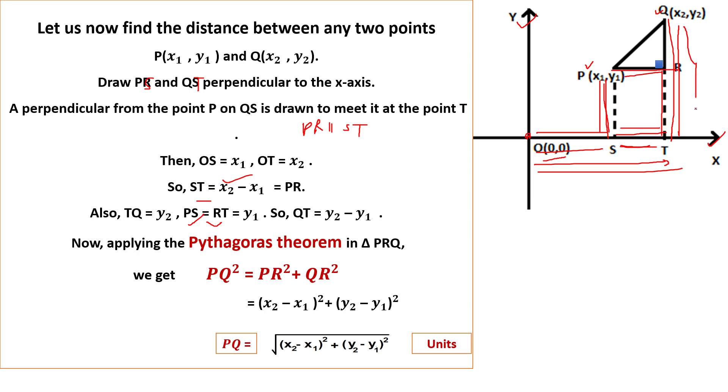Why? Because this whole length is y2 and this is y1, so RT is also y1, it will be y2 minus y1. Correct? So we find out QR and we find out PR.